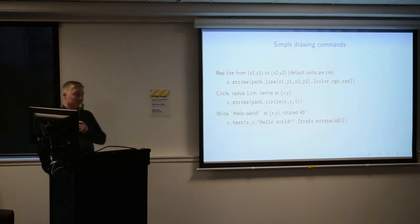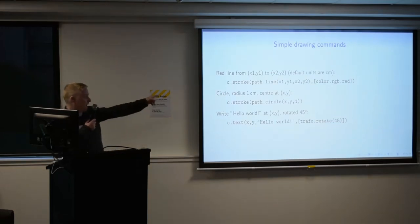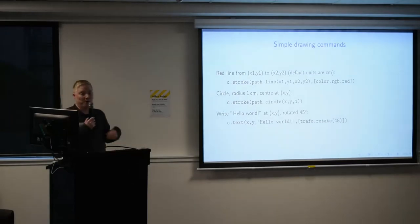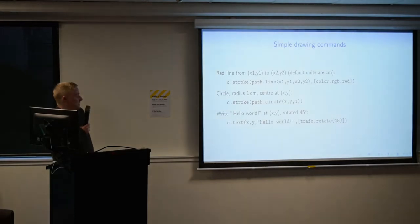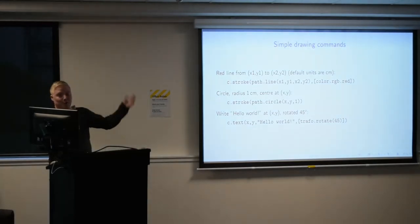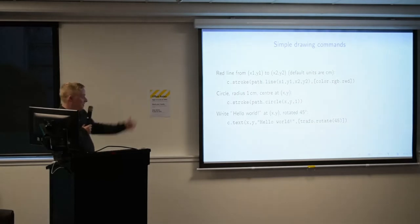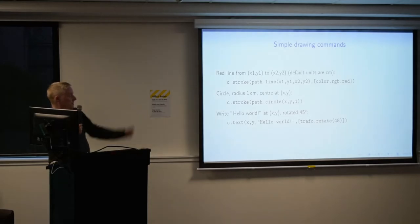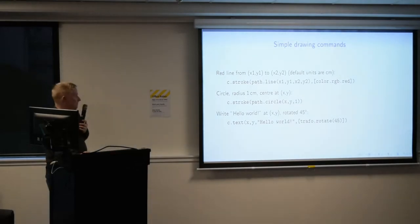The drawing commands are pretty easy. The first command creates a path which is a line from one point to another, makes the colour red, and uses the stroke command to draw it on the canvas. The second command creates a path which is a circle centred at point (x, y) with radius one and strokes it. The third command uses the text command, which takes coordinates, the text itself, and a list of properties — in this case rotating the text by 45 degrees.